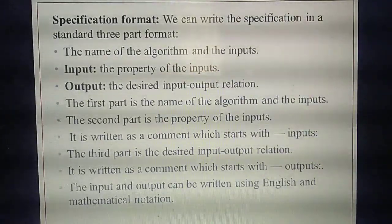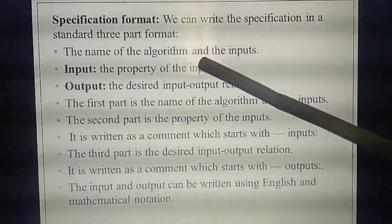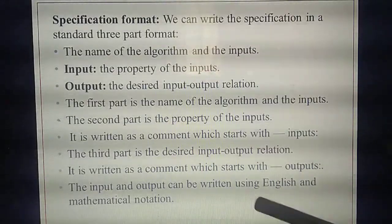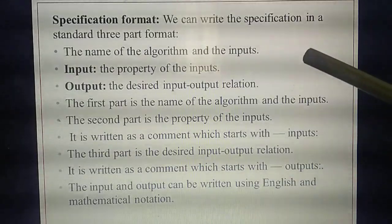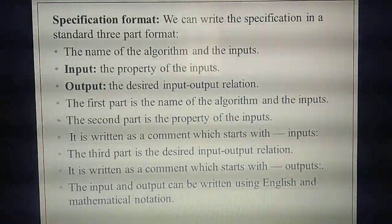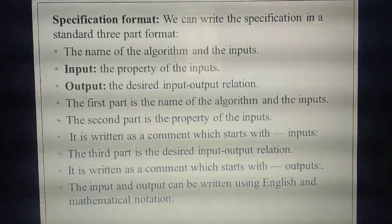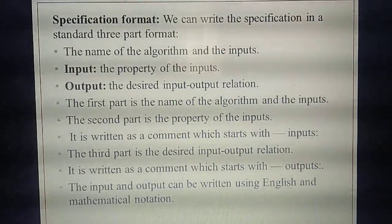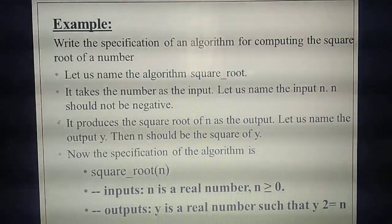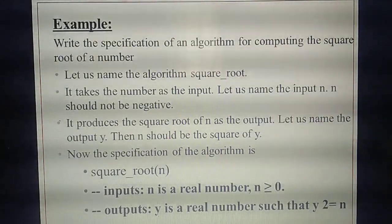The input and output relation is written with a comment line. Computer won't execute that line — it is only for human understanding. So both the inputs and outputs you need to write in a comment line, and you write in both English language and mathematical notation. This is the example for the specification. They will give many examples and ask you to write the specification formats.